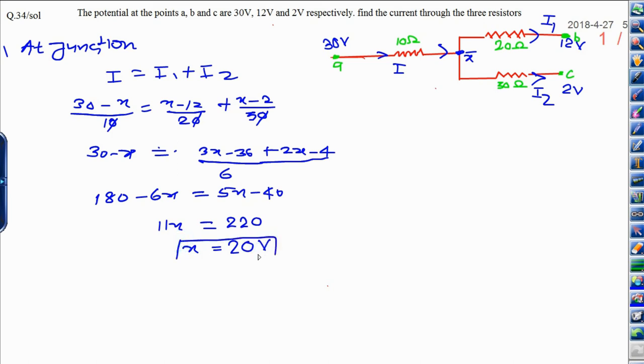20 volt is the potential at junction X. Now, I need to calculate the value of I1, I2 and I. First of all, calculation of I.